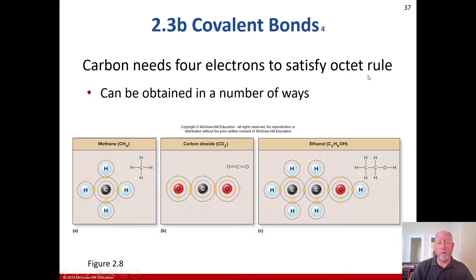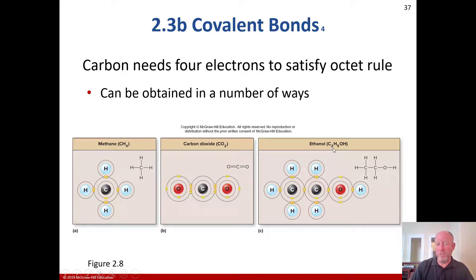Carbon needs four electrons to satisfy the octet rule, and that can be obtained in a number of ways. For example, methane (CH4): carbon has four different bonds, with two electrons each, so it bonds with four hydrogens. Carbon dioxide: carbon can have up to four bonds, so with two double covalent bonds with oxygen, you have CO2. And with its ability to form four bonds, we can have ethanol, C2H5OH, where each carbon makes four connections — carbon to carbon, then three hydrogens on one side and two hydrogens plus an oxygen on the other.